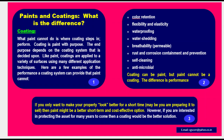Coatings: What paint cannot do is where coating steps in. Coating is paint with purpose. The end purpose depends on the coating system decided upon. Like paint, coatings are applied to a variety of surfaces using many different application techniques. Examples of performance a coating system can provide that paint cannot include: color retention, flexibility and elasticity, waterproofing, water shedding, breathability, rust and corrosion resistance, contaminant prevention, self-cleaning, and antimicrobial properties. Coating can be paint, but paint cannot be a coating — the difference is performance. If you want to protect the asset for many years to come, a coating would be the better solution.